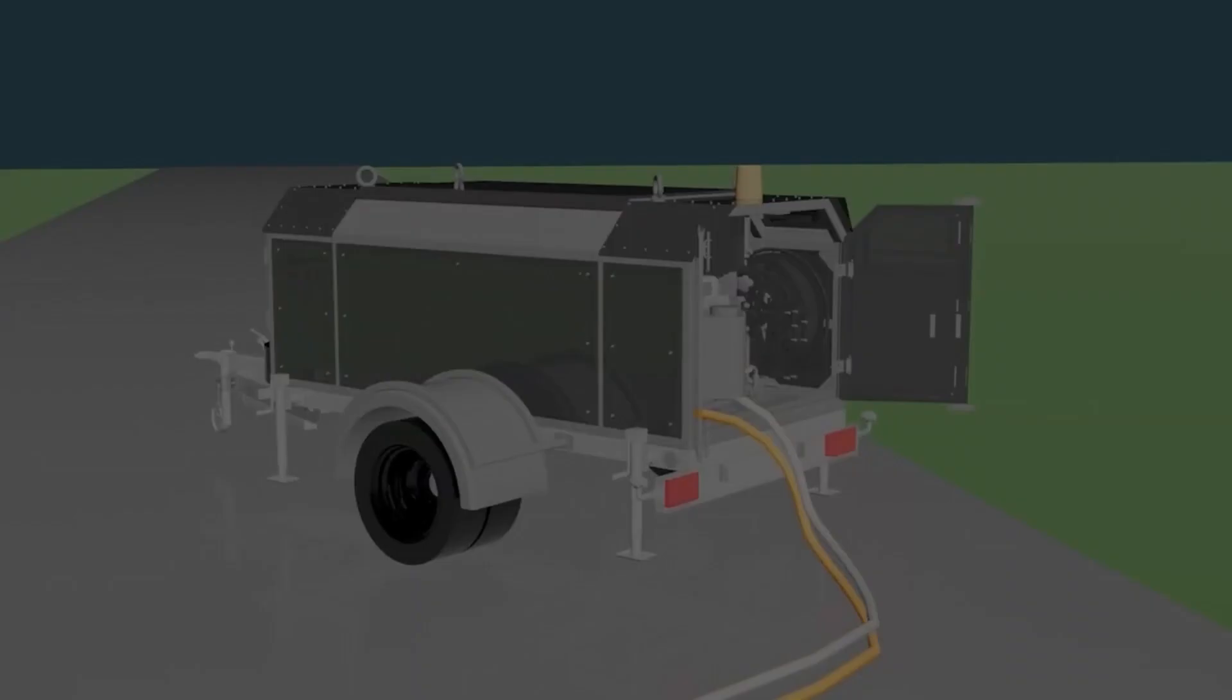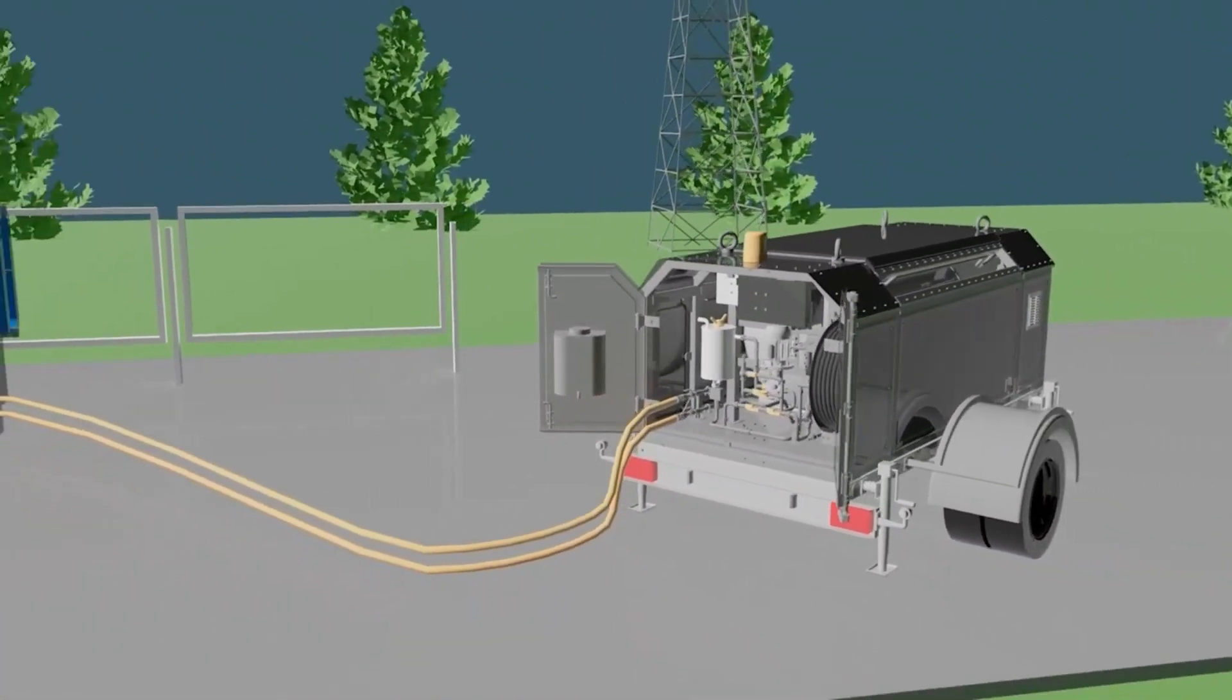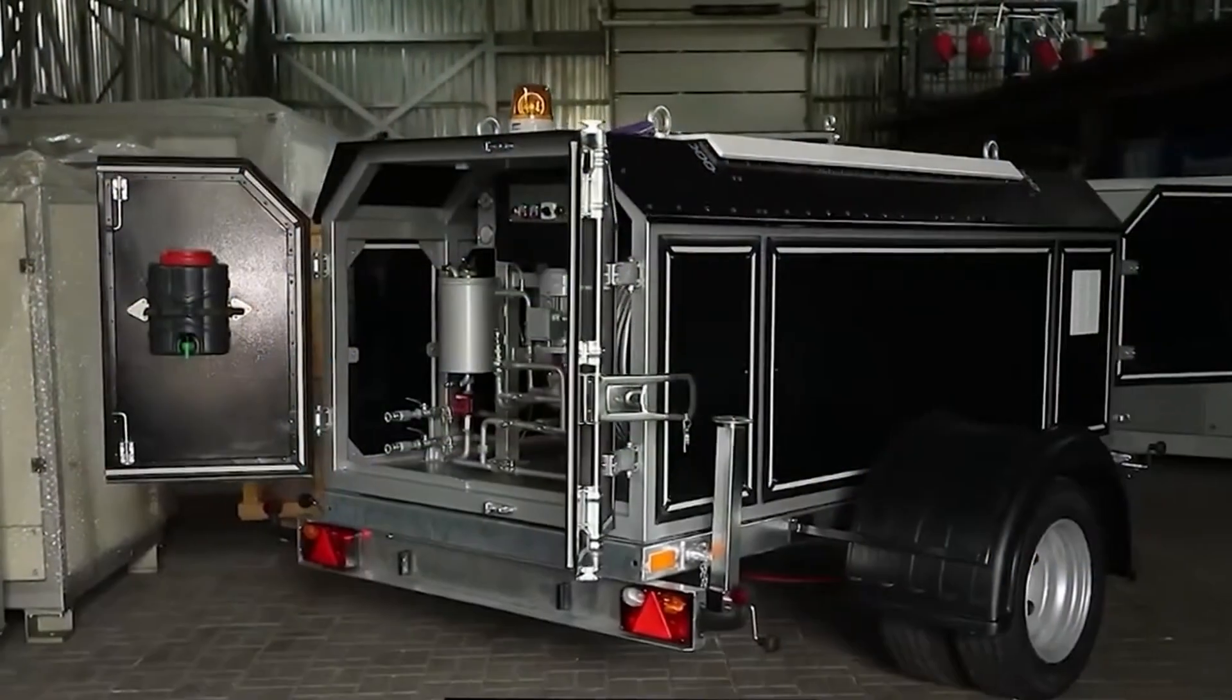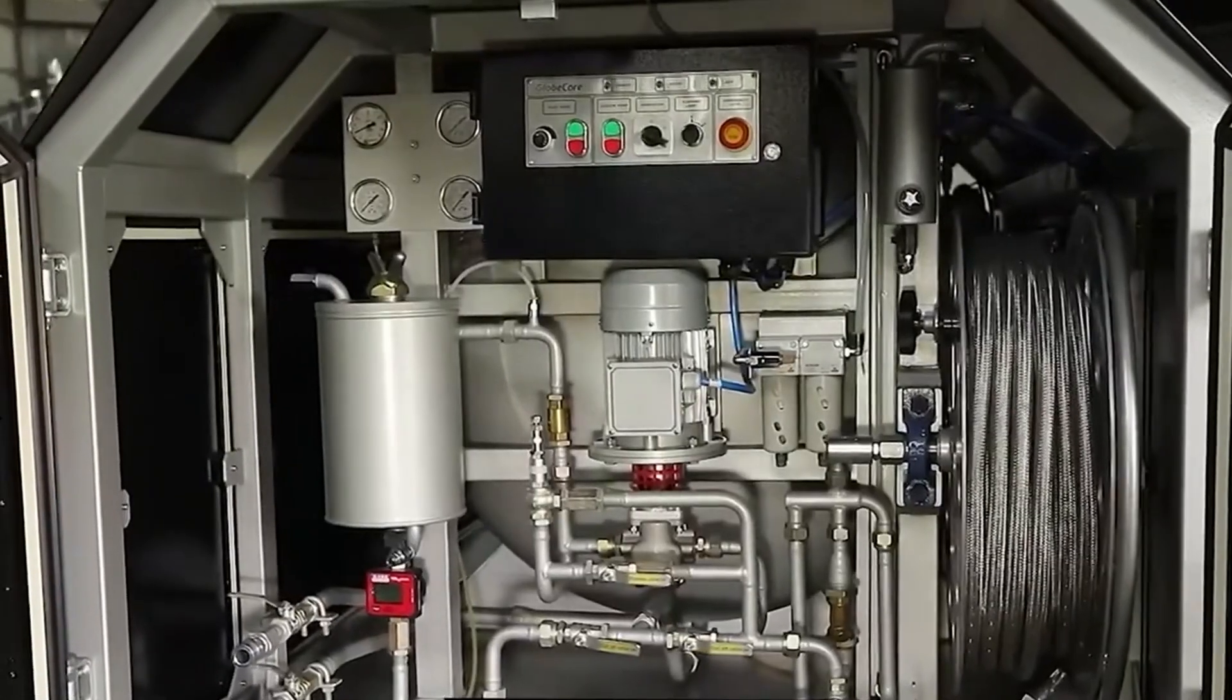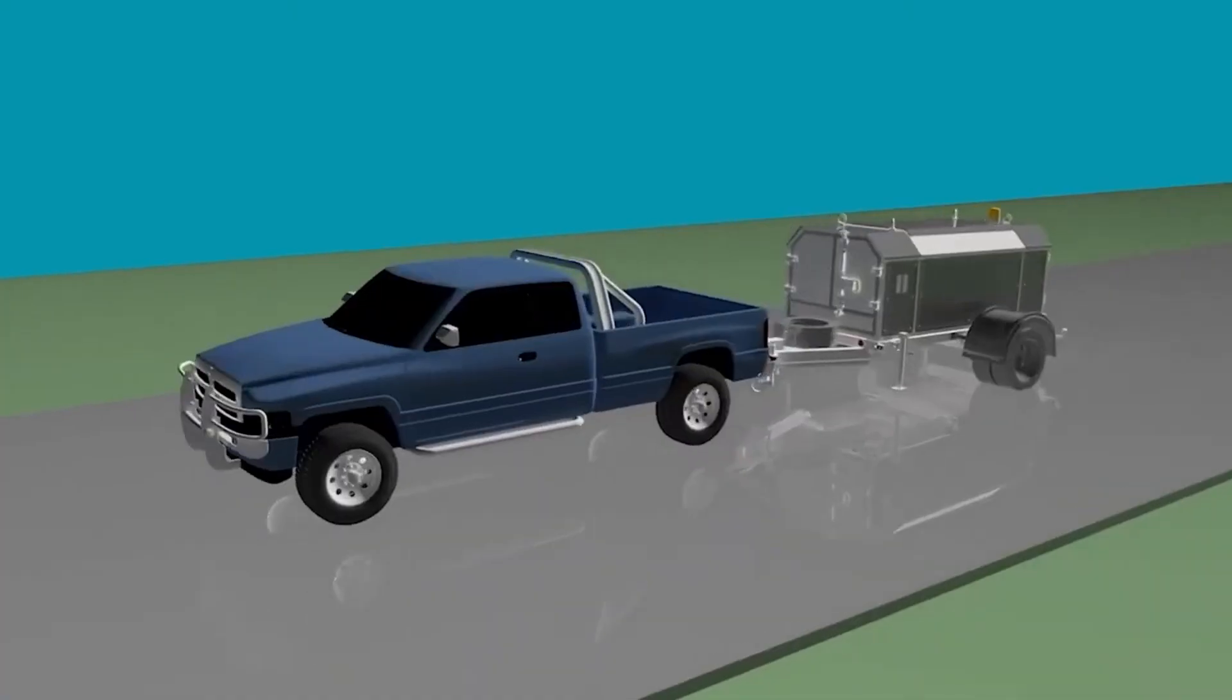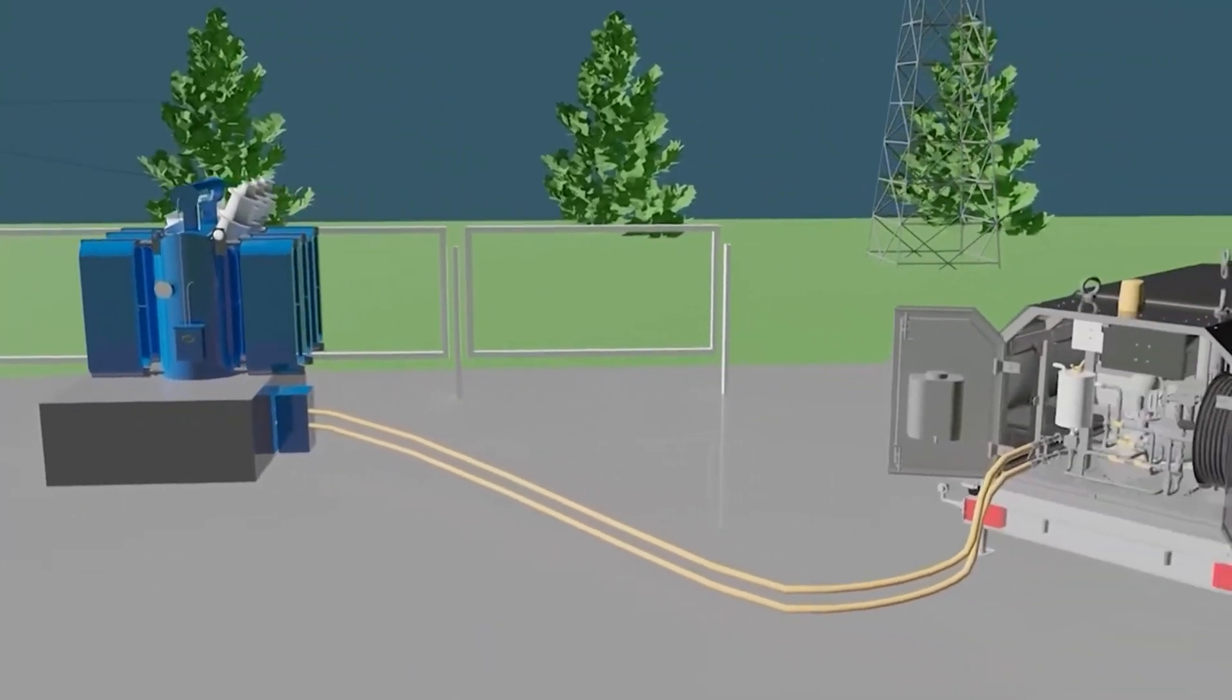GlobeCore product line also includes oil filling equipment not only for high voltage bushings, but also for a transformer tank. This is a multi-purpose UDM 0.6 machine which ensures saving the oil parameters obtained as a result of drying and degassing, oil delivery to transformer operation site, and oil filling in transformer.